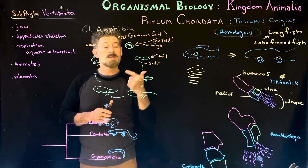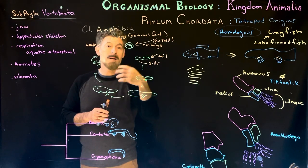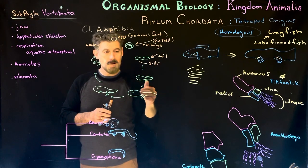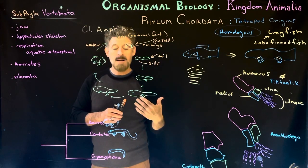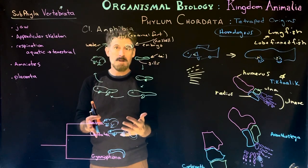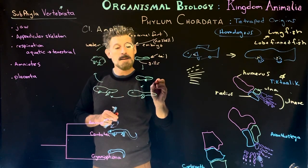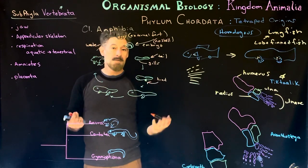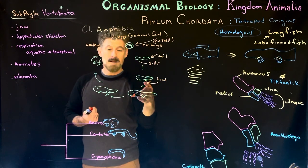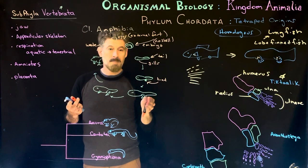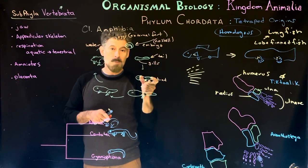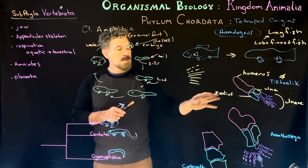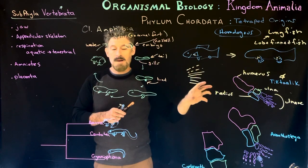They have pharyngeal gill slits, a notochord rearranged into vertebrae, and the post-anal tail. Over time, what starts to happen — and this will differ across amphibian groups — is that limbs start to develop. Typically the hind limbs develop first. The organism still has a tail and these little hind limbs and is mostly swimming, but it can start to use those limbs. This involves both bone development and muscular development.